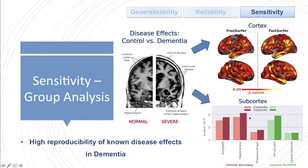The same is true for subcortical volume differences. FastSurfer, shown in darker colors, reaches lower p-values — indicated by larger bars — for differences between the amygdala, hippocampus, and thalamus, which are decreased in dementia patients compared to controls, as well as ventricles, which are enlarged. FastSurfer again shows increased sensitivity compared to FreeSurfer.